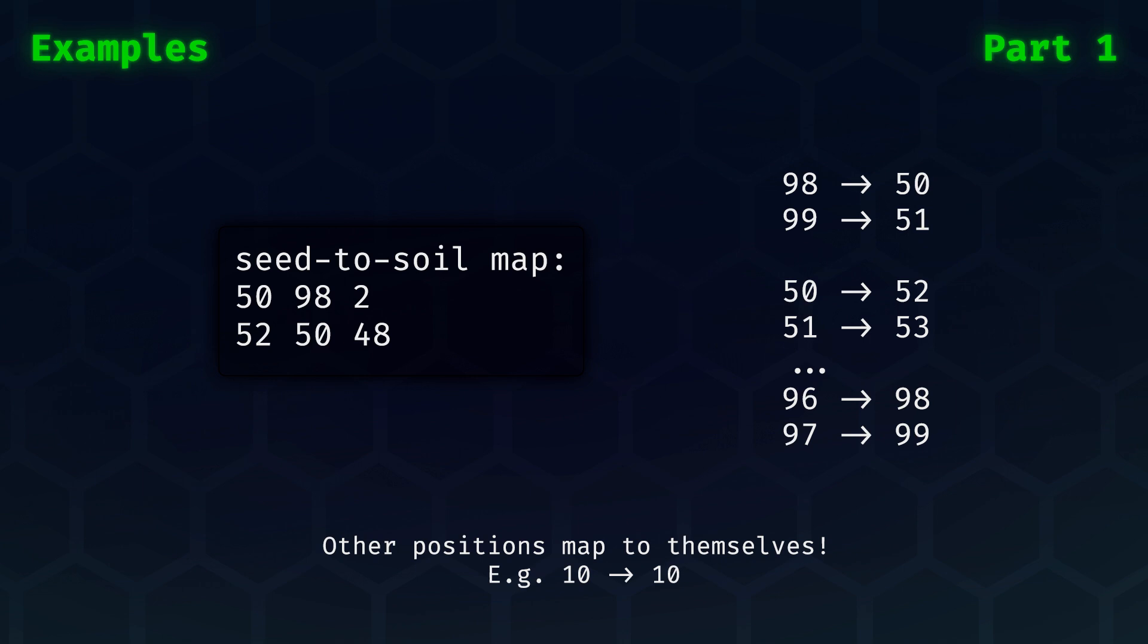So, for the second entry in the map, we can see that we map from 50 in the seed property to 52 in the soil property, and the segment for which this mapping relation holds is 48 numbers long, meaning that it ends with mapping 97 to 99. Should you ever have a position which is not in any given segment of a map, then that position simply maps to itself.